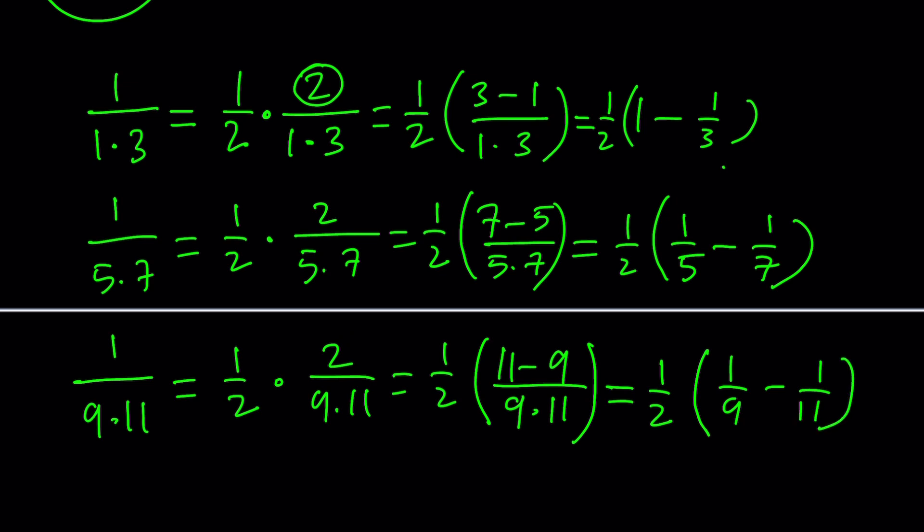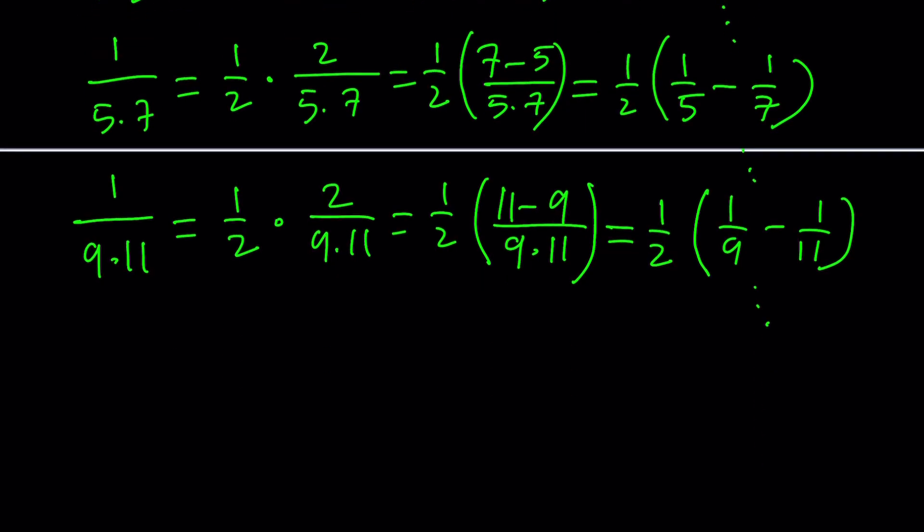Now we have three terms. We can put it all together and see what happens. There's more terms, but once we get the pattern we don't really need everything. We're going to have 1 half times (1 minus 1 third) plus 1 half times (1 over 5 minus 1 over 7). Notice there was no overlap, so the denominators are all different, there's no intersection.